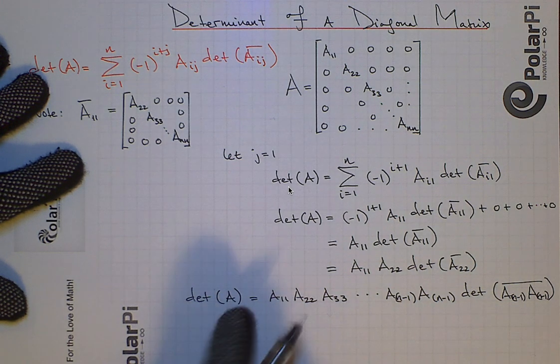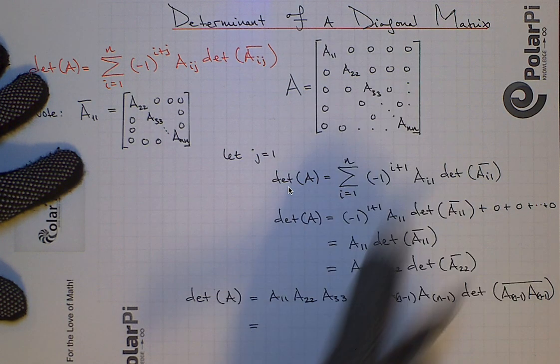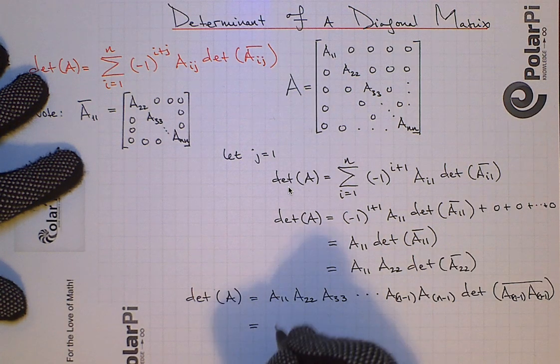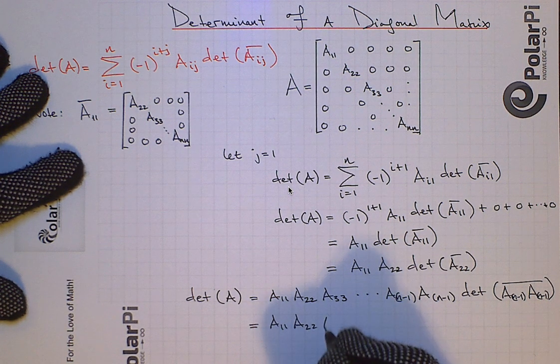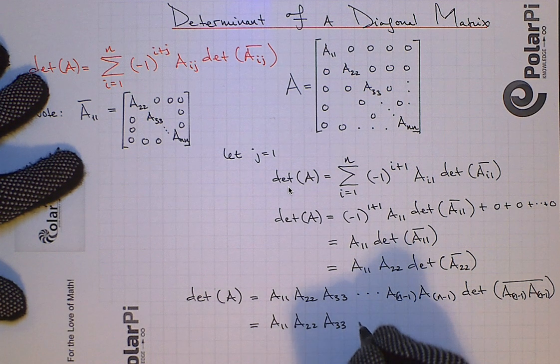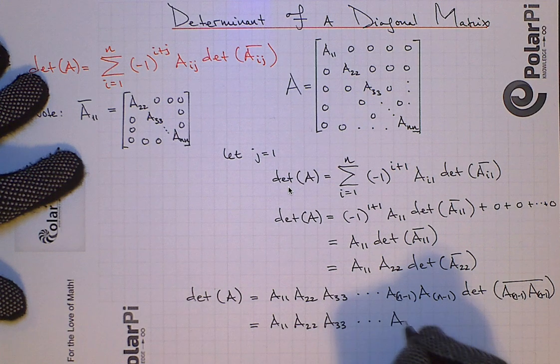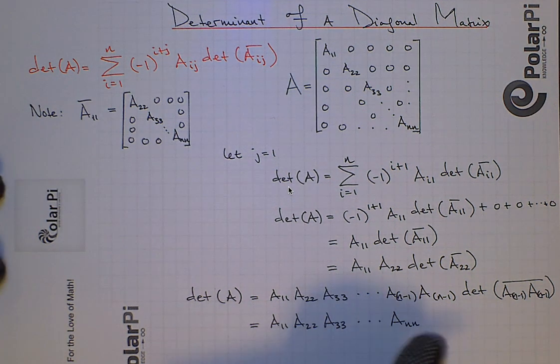So the determinant of A is for this diagonal matrix, and for any n by n diagonal matrix, it's just gonna be the product of the diagonals. So A11 times A22 times A33. For very similar reasons, same is true for triangular matrices. It's just the product of the diagonals of those triangular matrices.